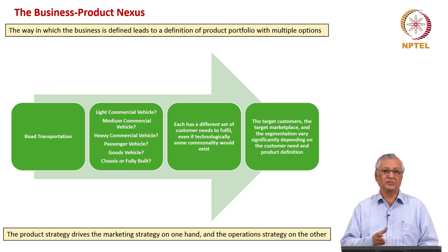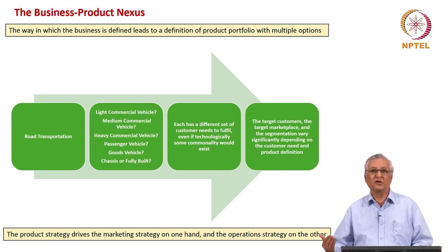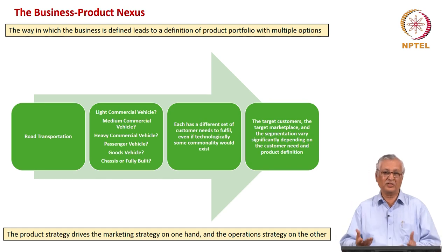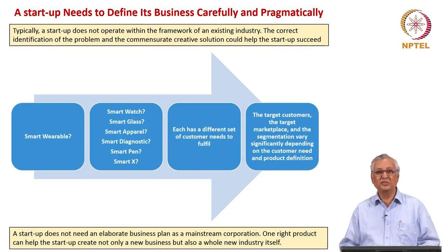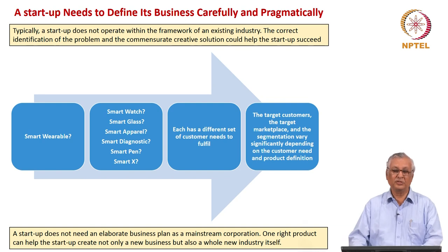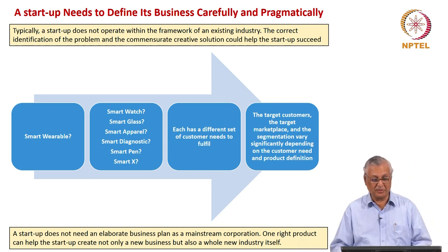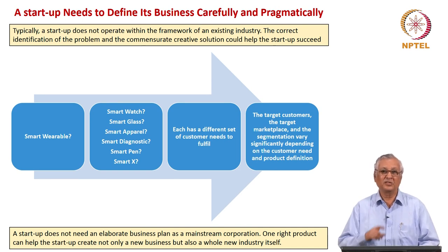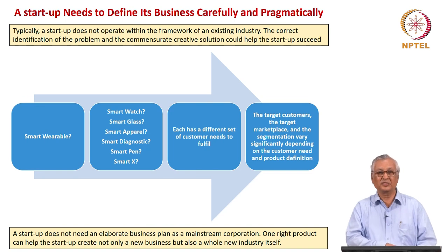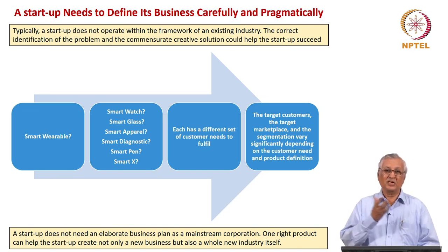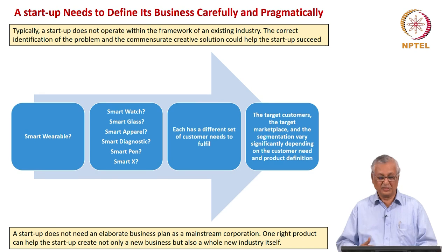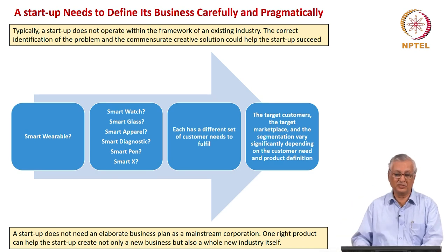Product strategy drives both the marketing strategy and the operation strategy. Depending upon the product portfolio defined by the business, operational requirements also vary. However, in respect of a start-up, the flexibility to define the business may not be as great as it is for an established company. A start-up must be very careful as to how it defines its business — carefully and pragmatically. Typically a start-up does not operate within the confines of an industry; it can create its own business and its own industry. Therefore trying to analyze a start-up's business purely in terms of an available industry structure is not always desirable — it should be open, innovative, and creative in defining its business.